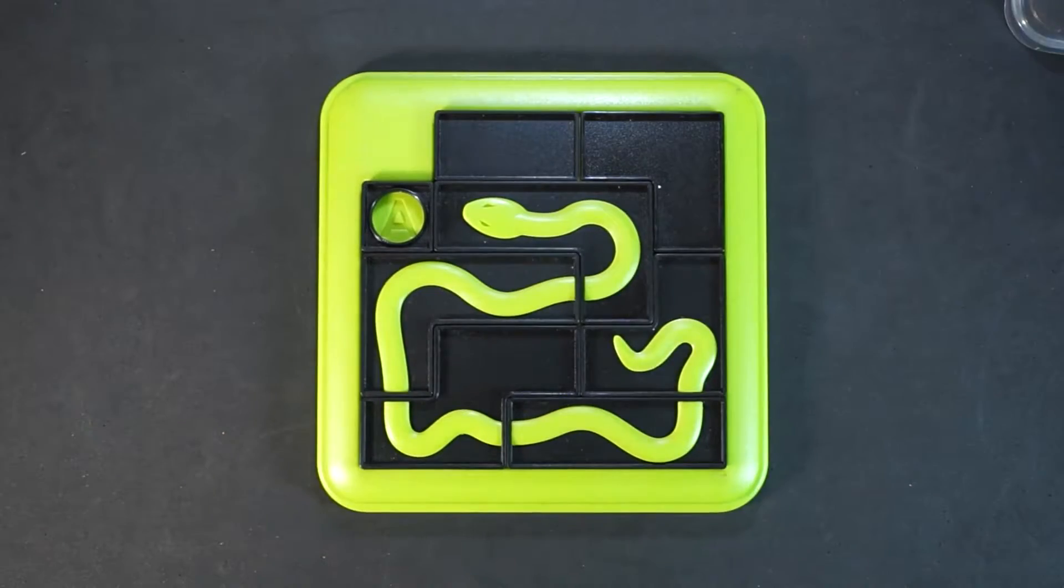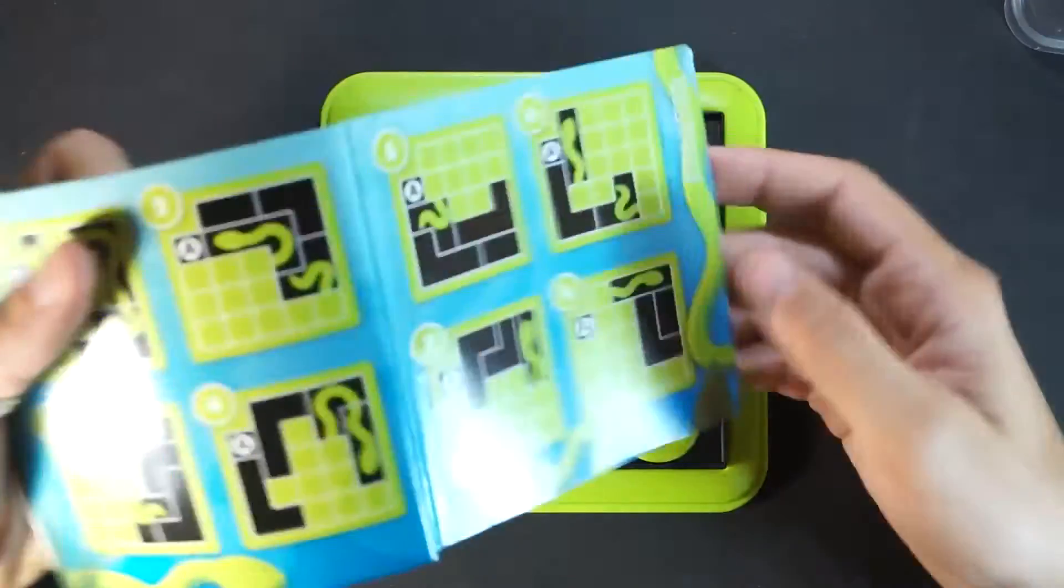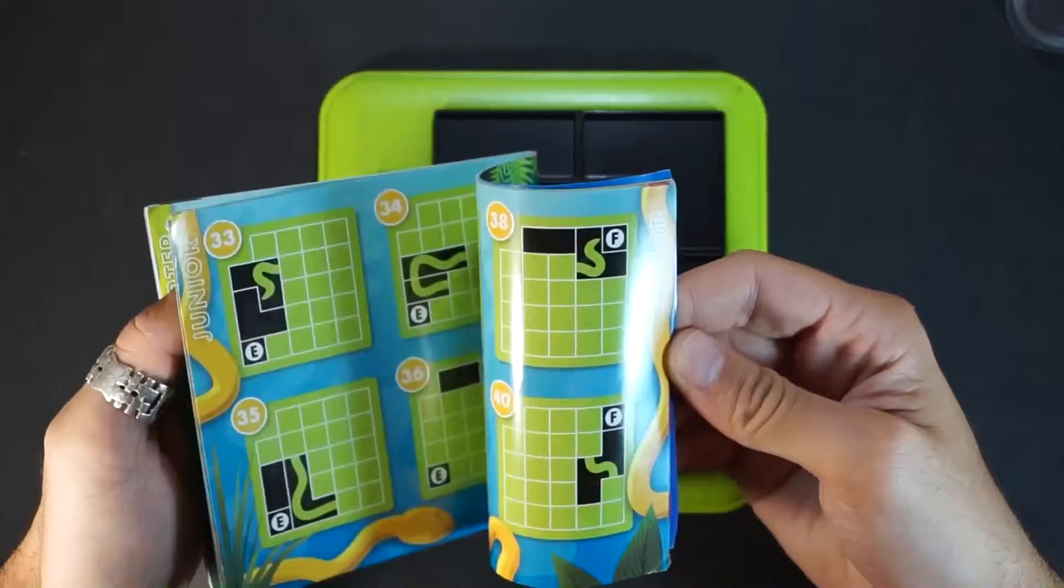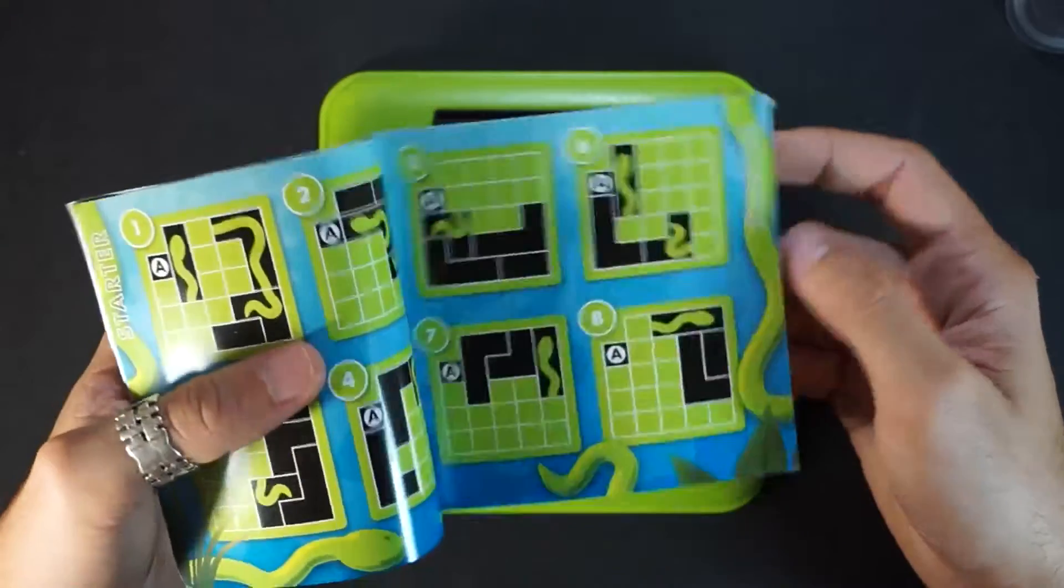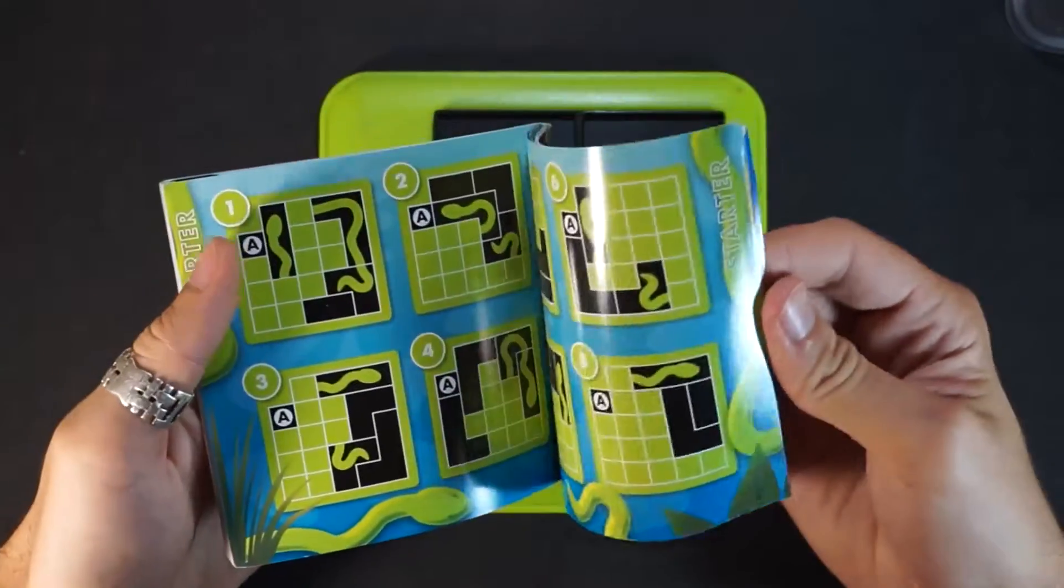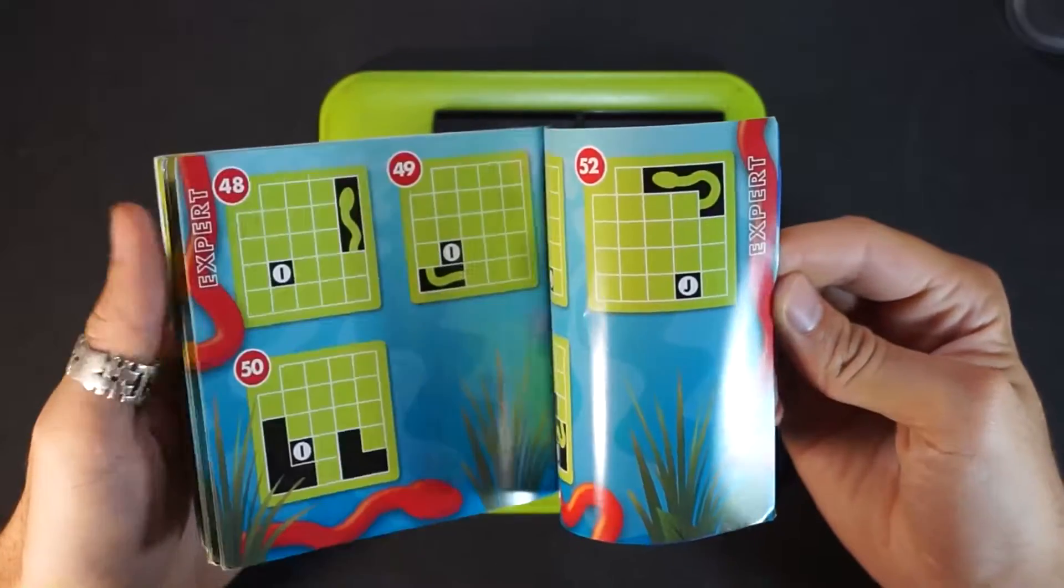So this is how it goes with the rest. The challenges get more and more complicated. There's 100 of them divided into five categories: Starter, Junior, Expert, Master and Wizard.